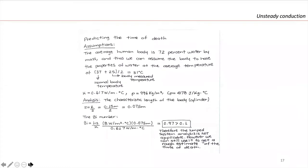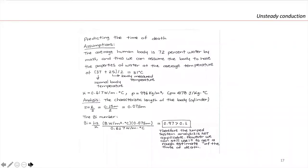The first thing to do is calculate the Biot number to determine if we can approximate this as a lumped heat capacity system. Since we are treating the body as a cylinder, the characteristic length is the radius over 2. The Biot number comes out to 0.97, which is bigger than 0.1, so the lumped heat capacity approach is not strictly applicable. However, I want to solve it anyway to get a rough estimate of the time of death.